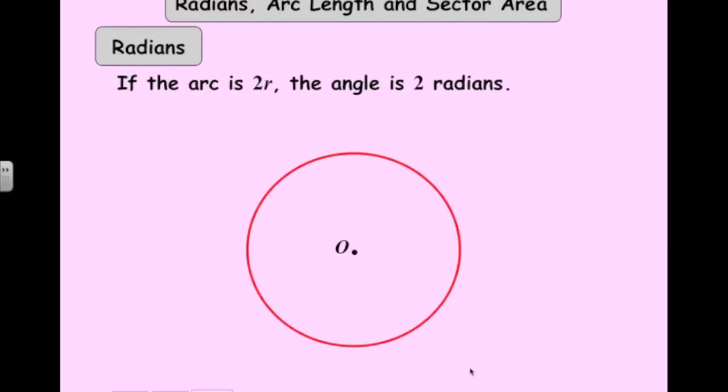Now if we double the length of the arc, so it's now two times the radius, then that angle there is now two radians. We triple the length of the arc. In other words, so the arc length is three times the radius. Then that angle there is three radians.